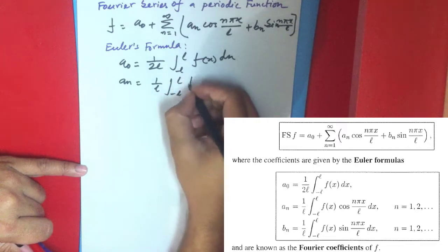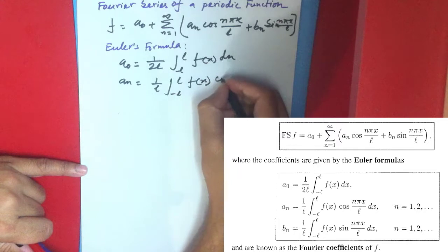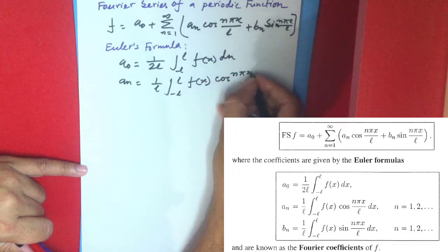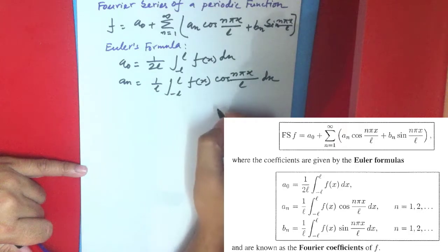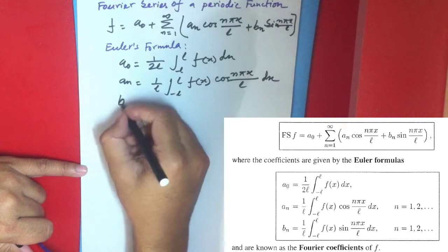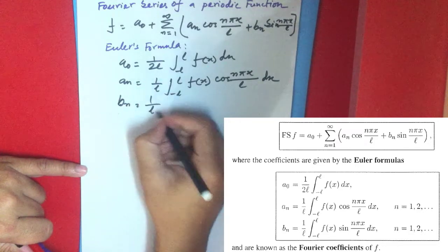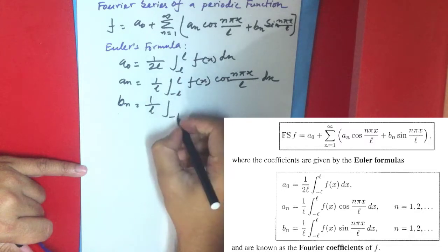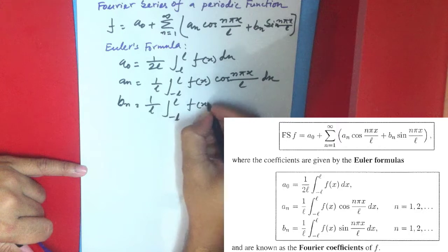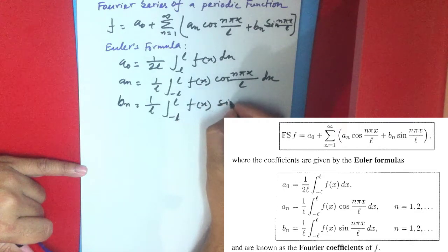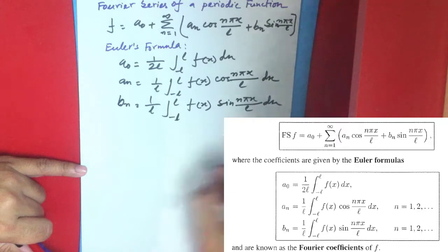And bₙ equals 1/L times the integral from -L to positive L of f(x) sin(nπx/L) dx, where n equals 1, 2, 3, and so on.